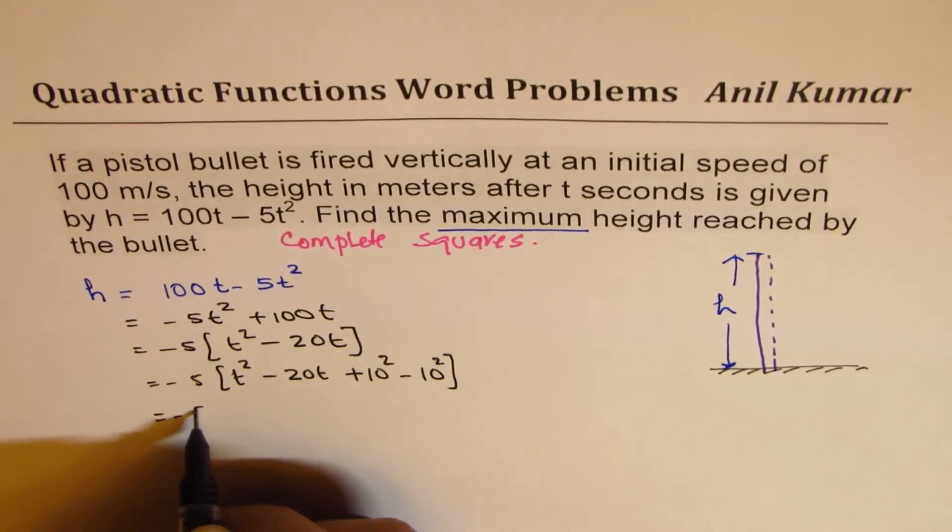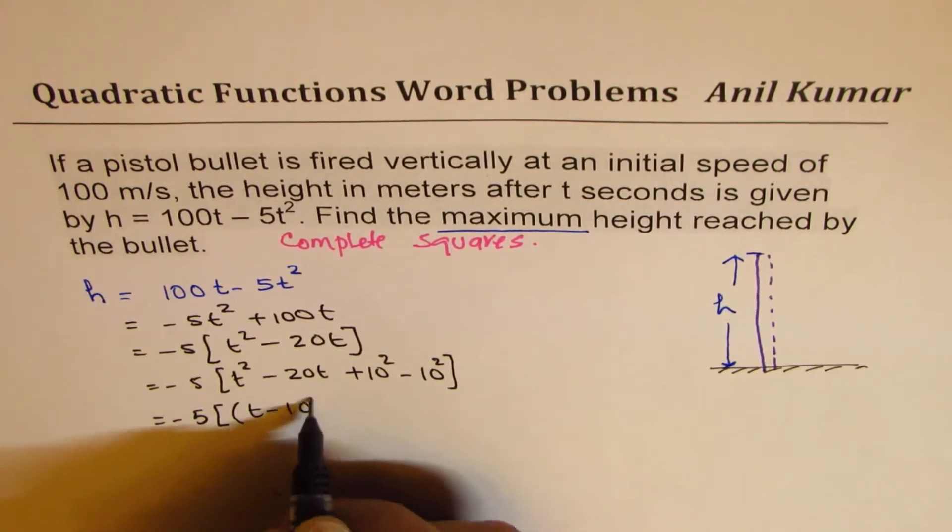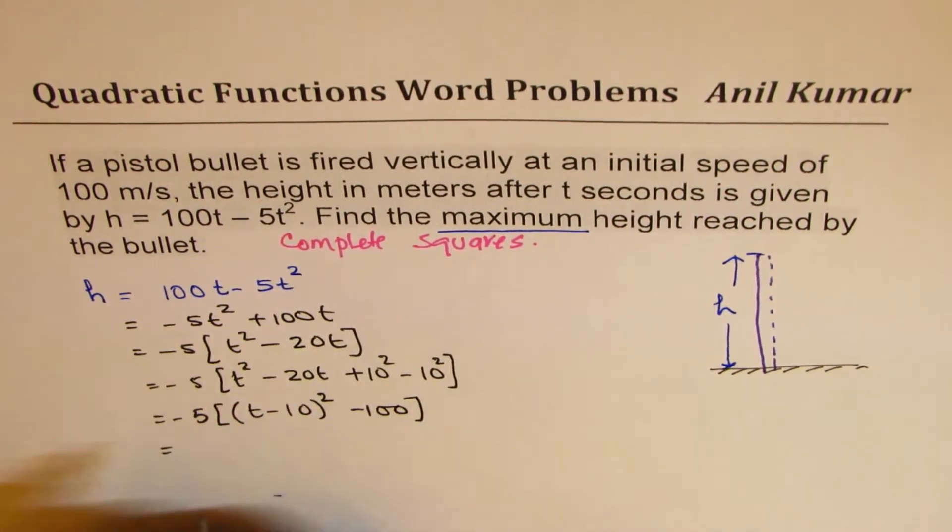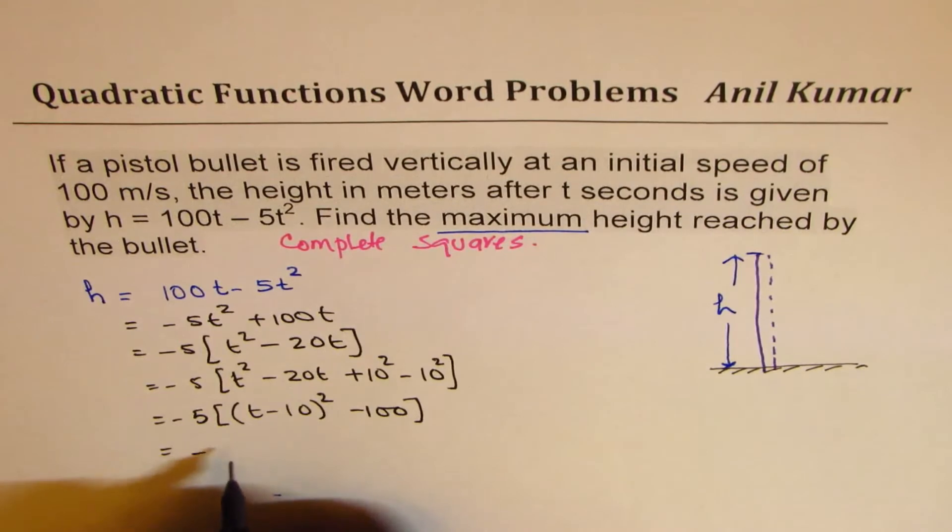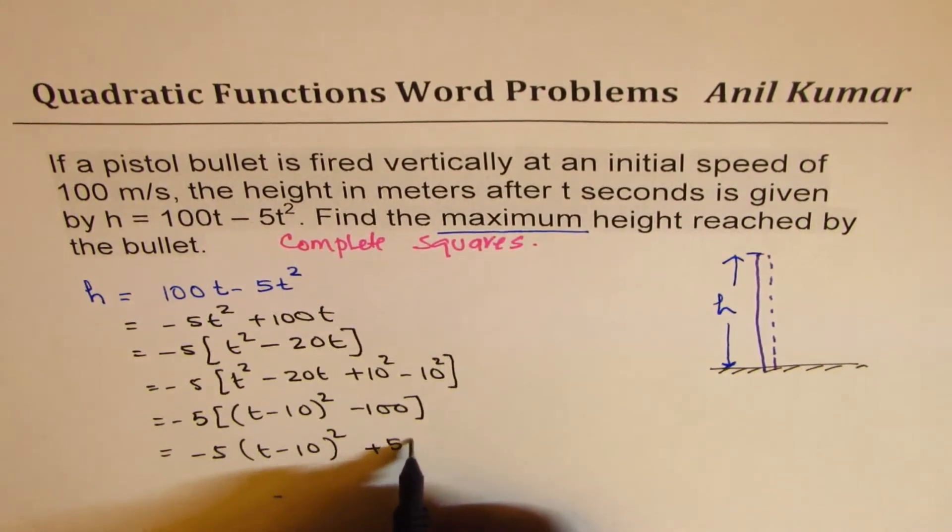Add and subtract square of 10. And then we know first three terms are perfect squares. t minus 10 whole squared minus 10 squared is minus 100. And now we can open the bracket.